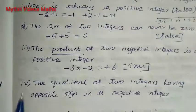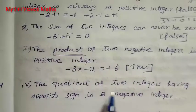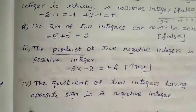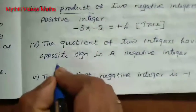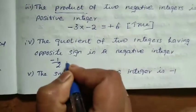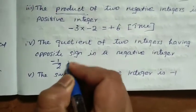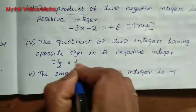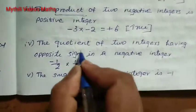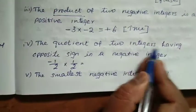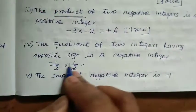And then the next one: the quotient of two integers having opposite signs. Quotient means divide. We can take minus 1 divided by 2, and also plus 1 divided by 2.